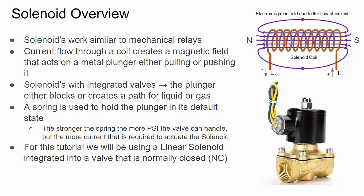A solenoid can be used for different things — door locks, and things like that. We're using a solenoid integrated with a valve to open or close it so water, gas, or something can flow. A solenoid typically has a plunger held in its default state with a spring. When you apply current through the coil, it creates a magnetic field that moves the plunger out from its default spot. I'm using a linear solenoid that's normally closed — meaning water can't flow through it — and when you apply current it opens. The stronger the spring, the more PSI the solenoid can handle, but the more current you need to create a stronger magnetic field.